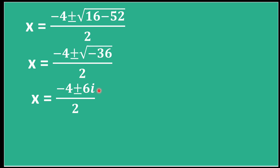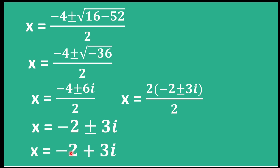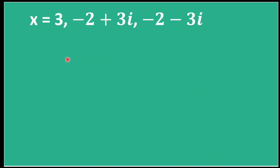So the expression becomes (−4 ± 6i) / 2. Taking 2 as common from numerator, the 2s cancel, giving x = −2 ± 3i. Opening into separate solutions: x = −2 + 3i and x = −2 − 3i. So overall we have three values of x: x = 3, x = −2 + 3i, and x = −2 − 3i.